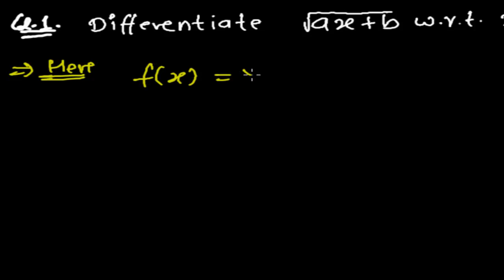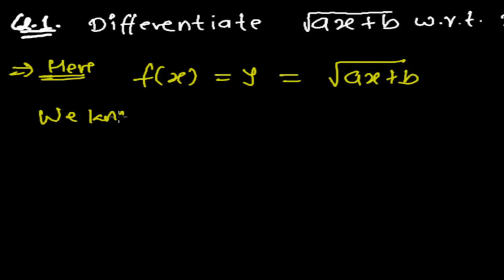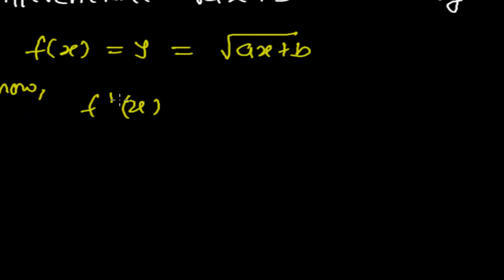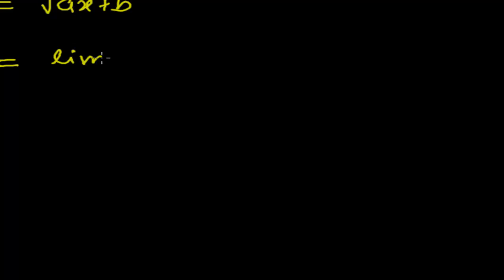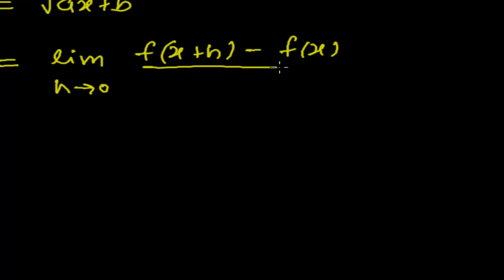Our given function f of x, or y, is root over ax plus b. What we know is that the derivative of function f of x, written as f prime of x, is equals to the limit as h tends to 0 of f of x plus h minus f of x, whole divided by h, where h is a very small distance.